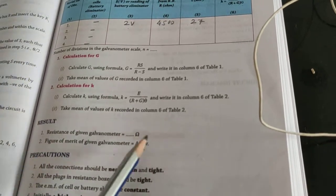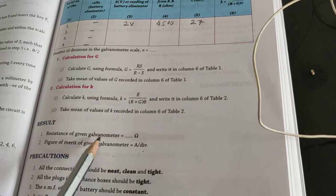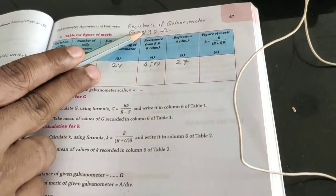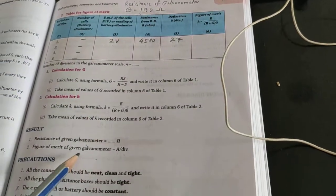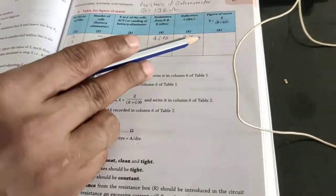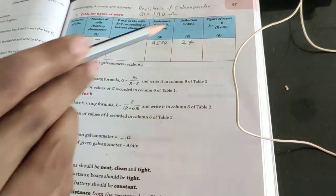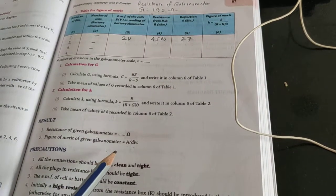At last we will write the result: the resistance of given galvanometer is obviously 190 ohm, which we got in the first part. And the second one, figure of merit, whichever we will get over here. Thank you so much.